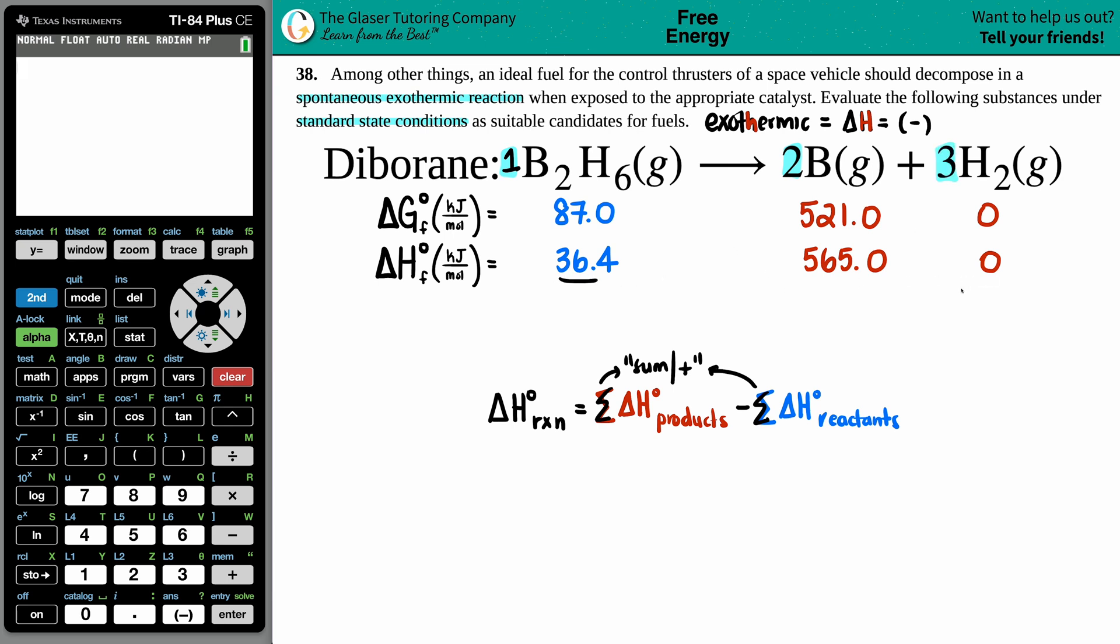These numbers are only for one of that substance so for each one of them, just to get into a good habit, you will multiply by your coefficients. So I multiply this one by one, the 565 times two, and the zero times three.